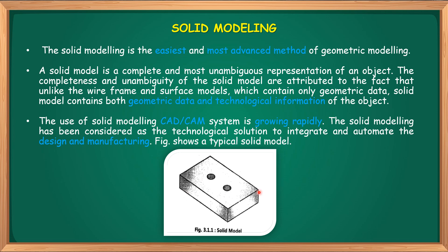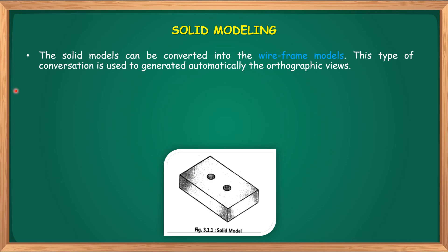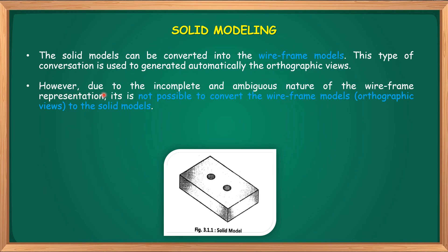A solid model can be converted into a wireframe model. This type of conversion is used to automatically generate orthographic views. However, due to the incomplete and ambiguous nature of wireframe representation, it is not possible to convert a wireframe model's orthographic view back into a solid model.